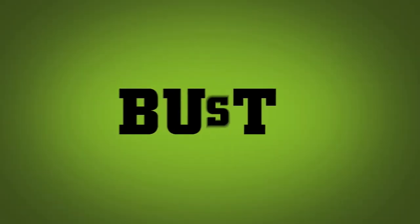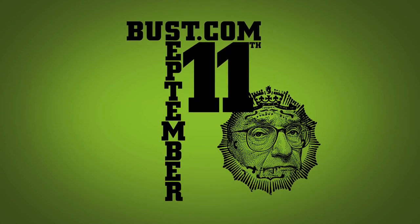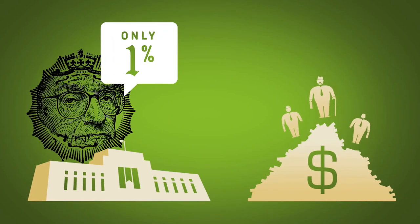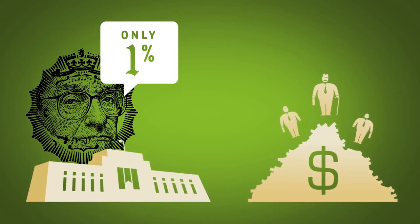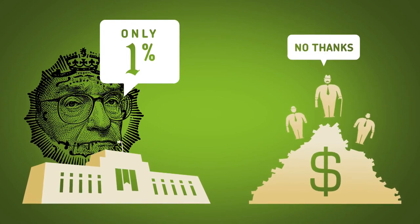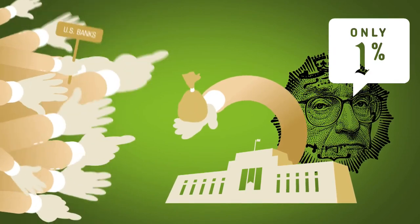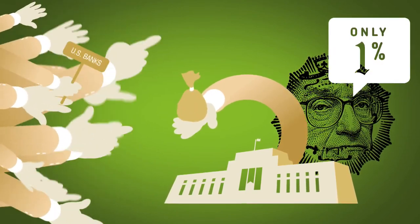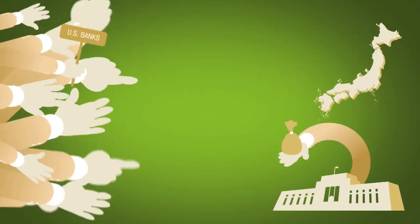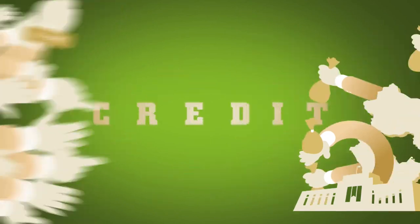But in the wake of the dot-com bust and September 11th, Federal Reserve Chairman Alan Greenspan lowered interest rates to only 1% to keep the economy strong — a very low return on investment — so the investors say no thanks. On the flip side, banks on Wall Street can borrow from the Fed for only 1%. Add to that general surpluses from Japan, China, and the Middle East, and there's an abundance of cheap credit.